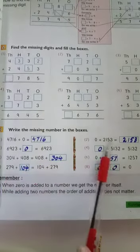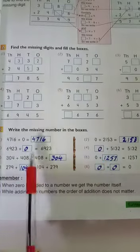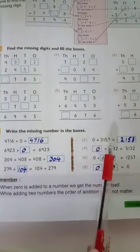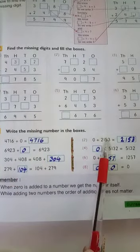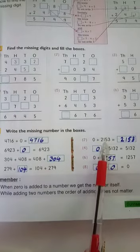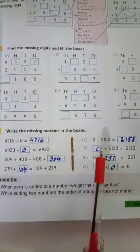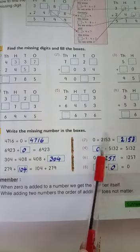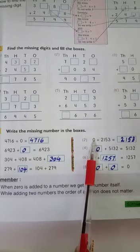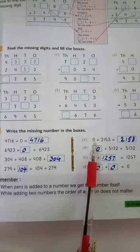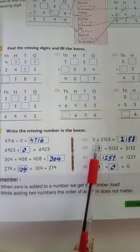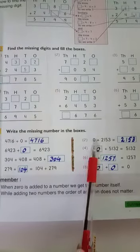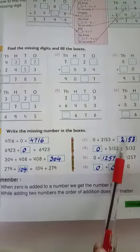Ab aap dekhein question number two ki taraf. Pehle wale question mein zero is side pe likha hua tha, number is side pe tha. Ab is question two mein unhone zero is side pe kar diya hai aur number is side pe kar diya hai, taaki aap confused ho jaayein aur sochne pe majboor ho jaayein. Jab zero mein koi cheez add karenge to bhi wohi value aa jaayegi. Agar aapke paas four sweets hain to four ki four hi rahengi agar main aapko zero add kar doongi — kuch bhi nahi doongi — to four hi rahengi. To humne is box mein isi value ko likh dena hai.